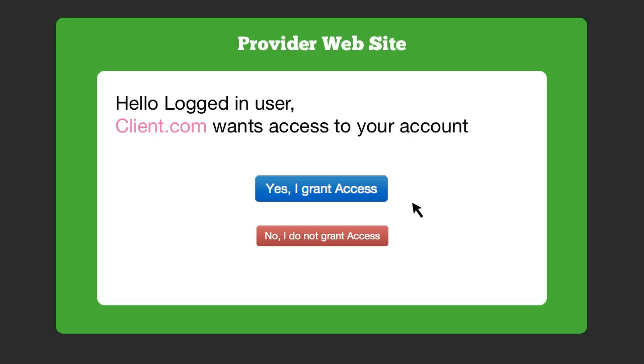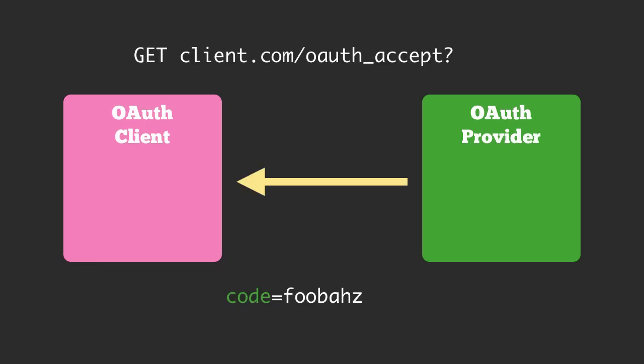If they say yes and grant access, then the OAuth provider will respond by redirecting the user back to the redirect URI given by the OAuth client. In addition, it will also include a parameter of code — a one-time-use unique token that can then be exchanged for an access token.